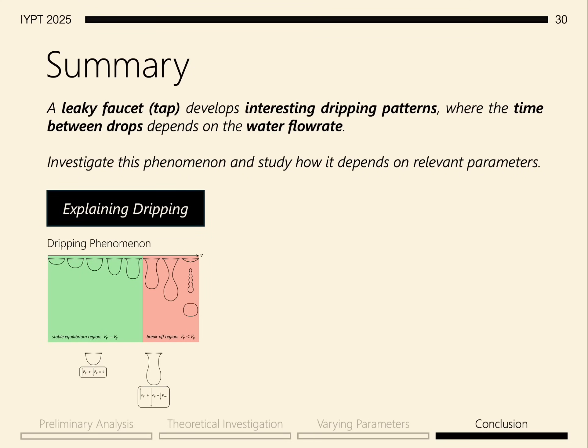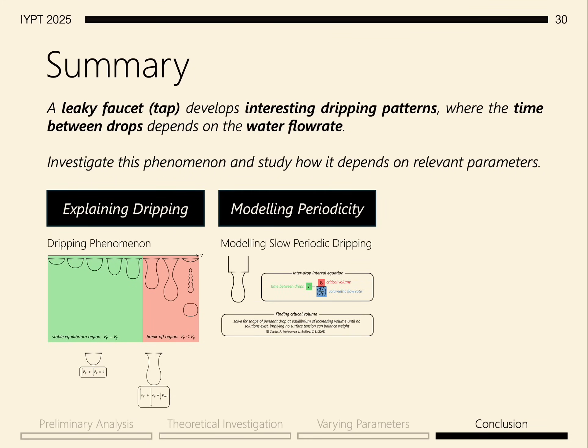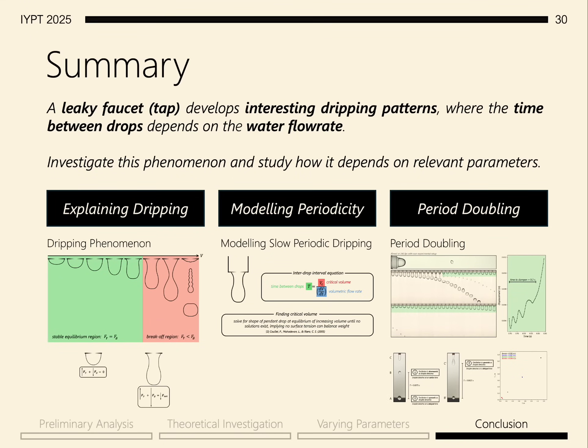From there, I explained the dripping by considering a critical volume where surface tension could no longer balance the weight. I proposed a simplified model of the time between drops, ignoring the important complexities associated with oscillations and residual water. I finally explained the phenomenon of period doubling by considering the oscillation time and how its phase determines whether a droplet comes out earlier or later, whose alternation results in period doubling as seen on a Poincare diagram.